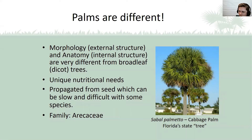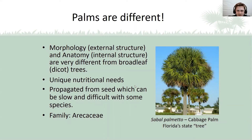Palms are technically referred to as arborescent — tree-like monocots. However, palms have more in common with a corn plant or a banana than they do with oak trees. This means the anatomy of palms and how they grow is very different from broadleaf trees, with quite distinct morphology and internal structures. They've also got unique nutritional needs, but they're all within one family of plants: Arecaceae.